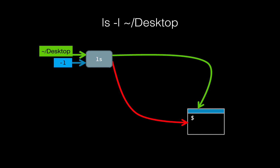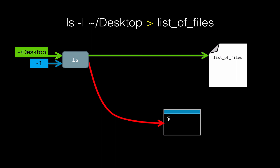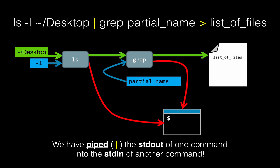In summary: we run ls with standard input from the desktop and an optional argument minus l. Both standard output and standard error came right back to the terminal. We could redirect standard output with the greater-than symbol to a file called 'list of files'. With the pipe operator, we take the standard output of ls and run it through another program — for example grep — which searches the contents or file names for a match to a particular string. This is a bit like the R command grep, which is inspired by this Unix command.